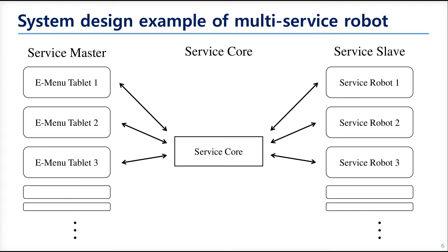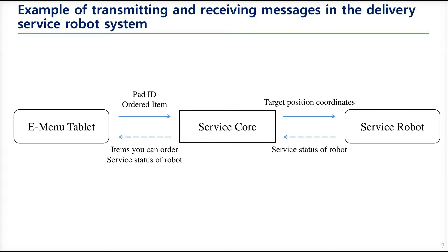During the delivery service, the system needs to avoid the situation where a robot is going to bring the same goods at the same time. So the system needs a control tower, and the control tower in the system is the service core. Once the tablet gets the order from the customer, the ID of the tablet and the data of the ordered goods will be sent to the service core. Since each tablet and robot are paired, the robot with the same ID goes to the specific location and comes back to the starting point. During the delivery, the robot sends the service status to the core, and the core updates the chooseable goods on the tablet screen. So if another customer orders goods that are currently under service, the tablet will show a message like 'the goods you have selected is currently unavailable,' and it prompts the customer to select other goods.